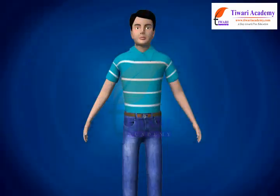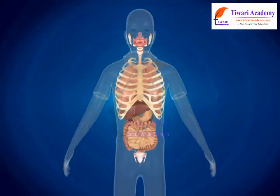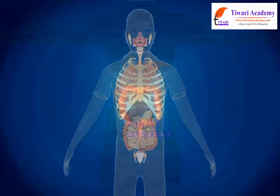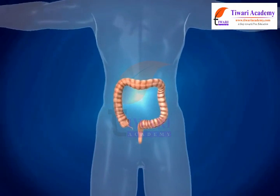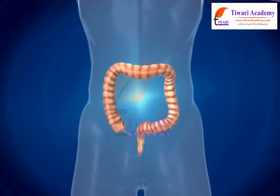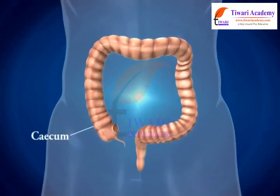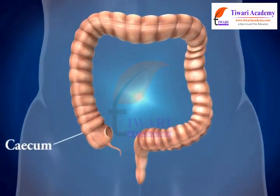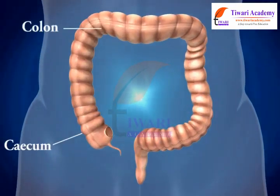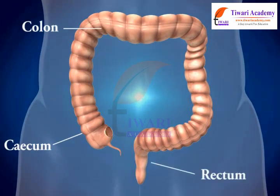Dear students, as we have already discussed, the large intestine is made up of three parts: cecum, colon, and rectum.